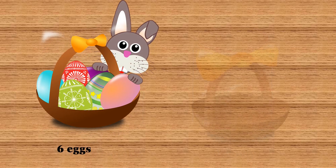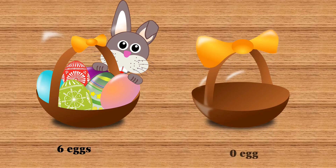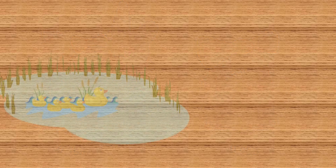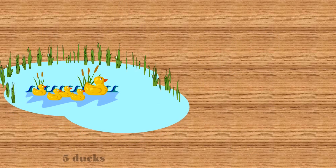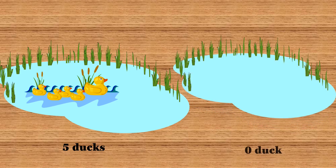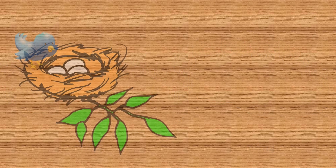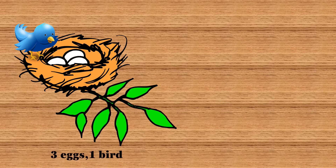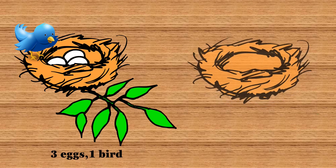Let's see a few more examples. This jar has many candies; this jar has zero candies. This basket has six colorful eggs.